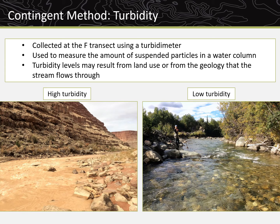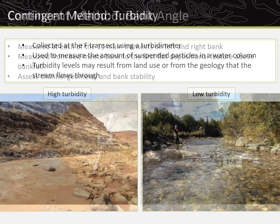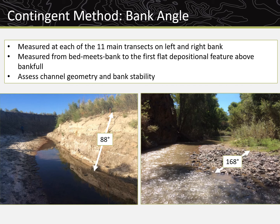Turbidity is measured using a turbidometer at the F transect and is a measure of the extent to which light is scattered when transmitted through water, providing an approximation of suspended sediment loads. High turbidity levels may result from any land use that disturbs the soil surface and contributes sediment to stream systems, such as mining, timber harvest, or off-road vehicles. Bank angle is measured at each of the 11 main transects on both left and right bank, from where the stream bed meets the bank to the first flat depositional feature at or above bankfull, and is another assessment of channel geometry and bank stability.